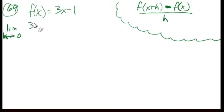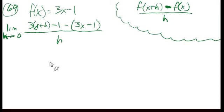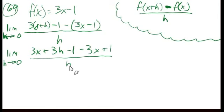So f of x plus h means we replace x with x plus h. That gives 3 times x plus h minus 1, minus f of x — which is 3x minus 1 — all over h. When we try to let h go to 0, we can't just substitute directly because we'd divide by 0. Working it out: 3x plus 3h minus 1 minus 3x plus 1 over h. The 3x and negative 3x cancel, the negative 1 and positive 1 cancel, and we're left with 3h over h.